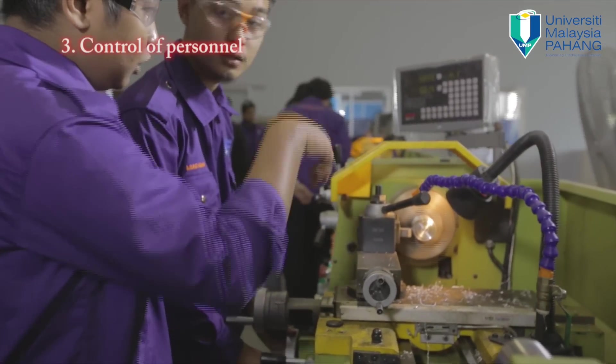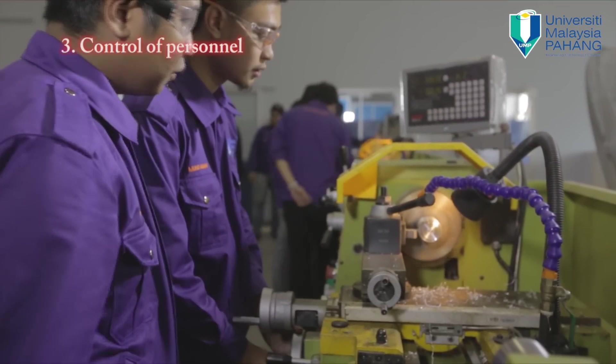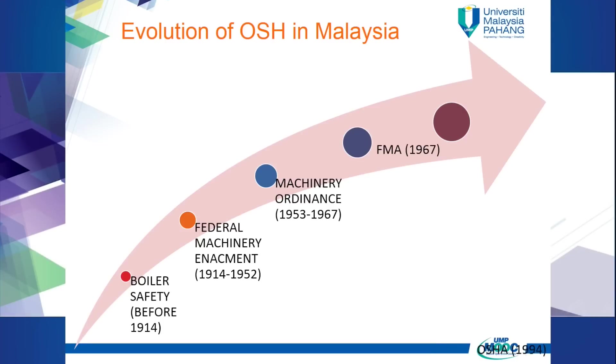The approaches of the FMA 1967 are: number one, control of machine operations; number two, control of work environment; number three, control of personnel.